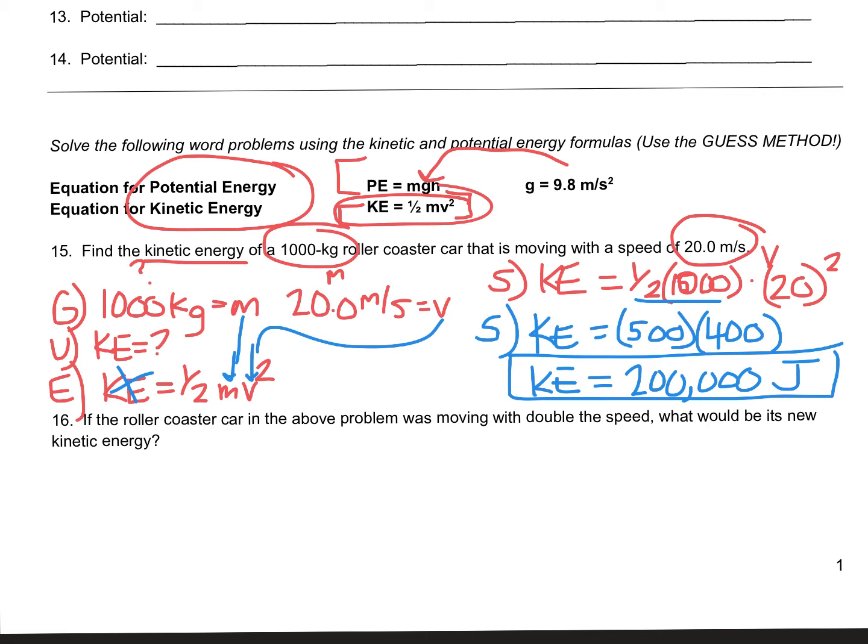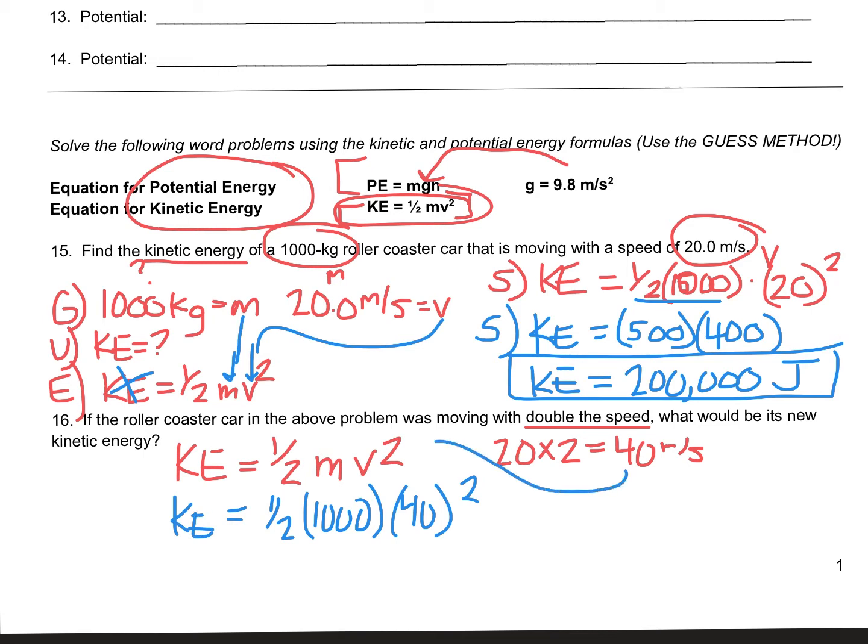All right, perfect. Let's move on to number 16. 16 says, if the roller coaster car in the problem above was moving at double the speed. So originally it was 20 meters per second. So if we double that, it's going to be 40 meters per second. What would be its new kinetic energy? All right, perfect. Well, we've got everything the same setup as the last problem, except we've got a slightly new velocity. So let me write down the equation for kinetic energy. And now, let's plug in for mass. Mass is still 1,000. But since the question said, what if we double the speed? 20 is now 40. So it's going to be 40 squared equals KE. That double velocity goes right there. That's where 40 came from.